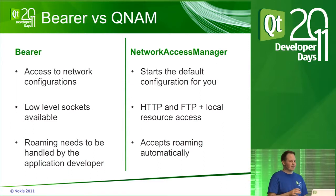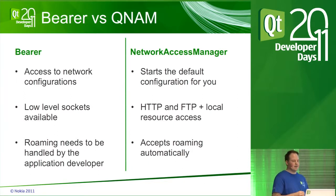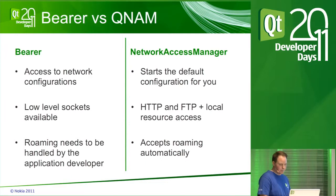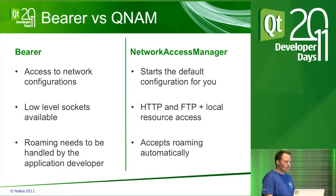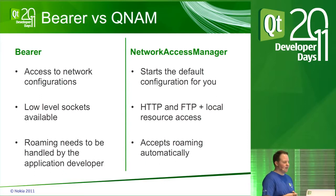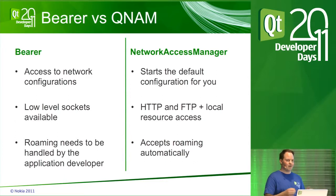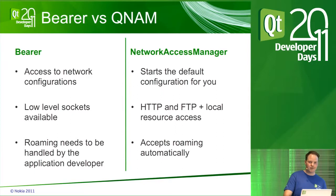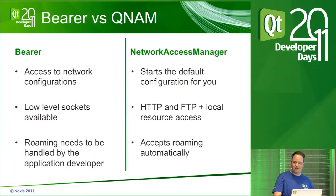You can also use the Bearer APIs to select a non-default configuration and give it to the Network Access Manager. A special case is if you want some traffic going via one configuration and some via another. Before Qt 4.8, you'd basically need to delete the previous QNAM and open a new one with a different configuration, or use child processes. But it's fixed in Qt 4.8 — you can have many QNAMs pointing to different configurations at the same time.